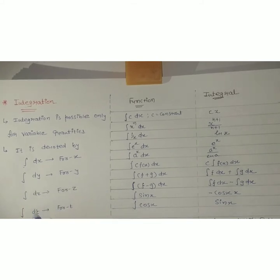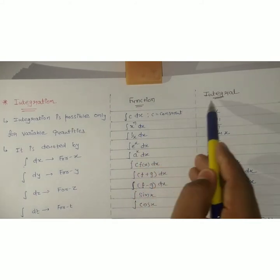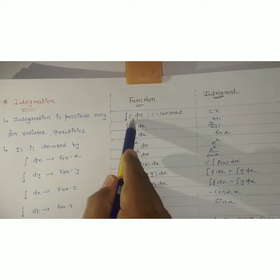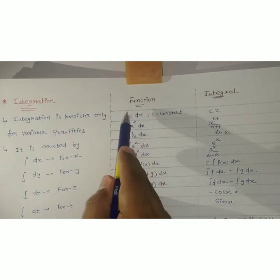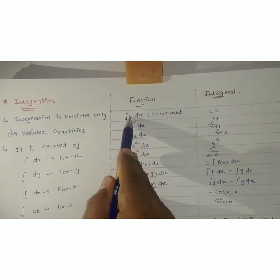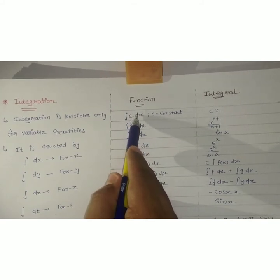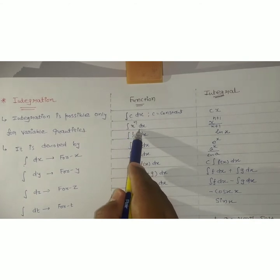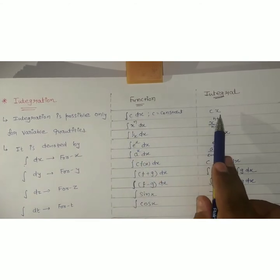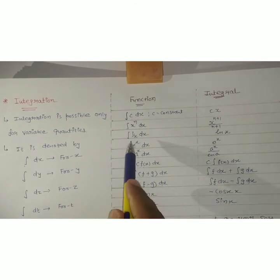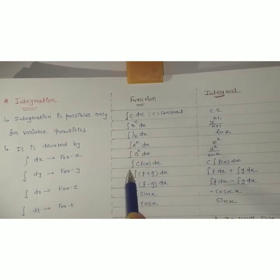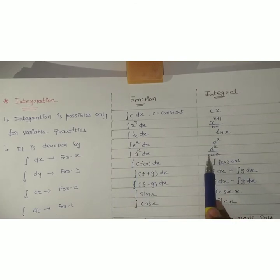Function means 'some kind of thing' and integral means 'answer.' First rule: integral of c·dx, where c is a constant — in differentiation the constant gave answer 0, but in integration a constant gives cx. For x raised to n: the integral is x raised to (n+1) upon (n+1). Integral of 1 upon x is ln x. Integral of e raised to x is e raised to x. Integral of a raised to x is a raised to x upon ln a.